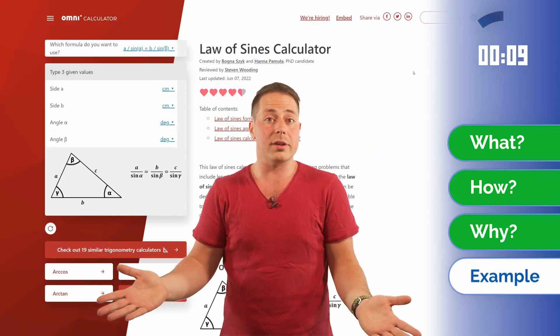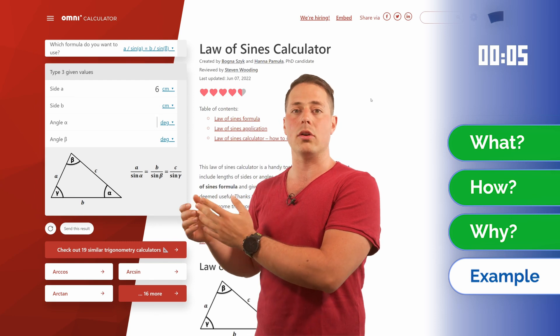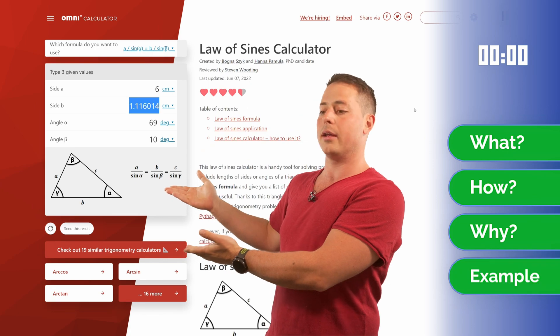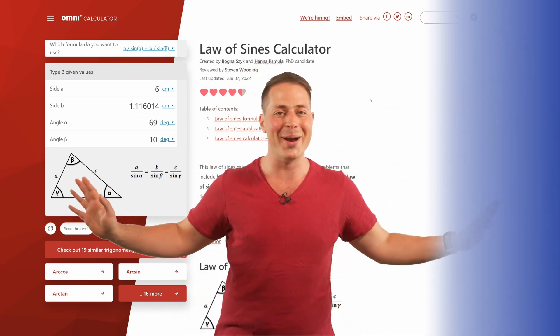So all we have to do now is the example. So let's say we have a triangle with sides 6 and angle 69 and 10 degrees, and the result is calculated just in time. Perfect timing.